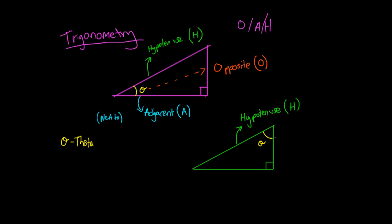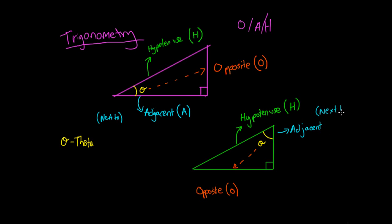We said before that our opposite side was the side opposite to our angle theta. So if we look now, whereas before our opposite side was over there, now our opposite side is going to be this side here — and we'll call that O. So just by changing the angle theta, we've changed exactly where our opposite side is. And again, if we want to find our last side, it's this side here which is now touching our angle theta. So we now say that this side here is adjacent to our angle theta — adjacent just meaning next to — so we call this side our adjacent side.